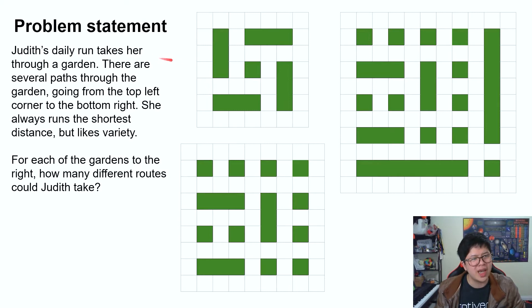Judith's daily run takes her through the garden, and there are several paths through the garden, going from the top left to the bottom right. She always runs the shortest distance, but likes the variety. For each of the gardens to the right, how many different routes could Judith take?